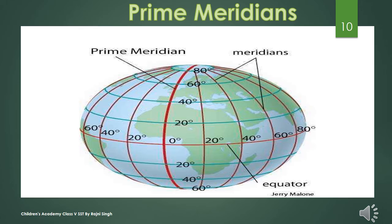Next is the number of meridians. The prime meridian passes through Greenwich, which is located in London. It is the starting point for numbering the meridians and is marked as 0 degrees. The longitude of a place is measured east or west of the prime meridian. It divides the earth into two halves: the eastern hemisphere and the western hemisphere.